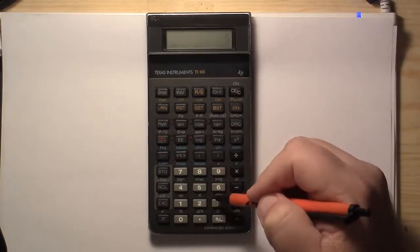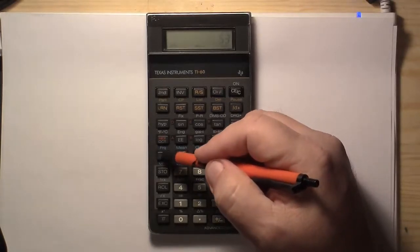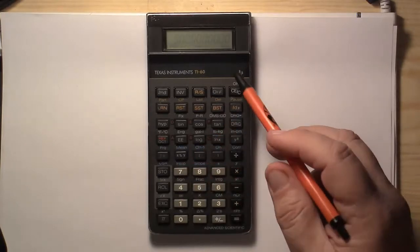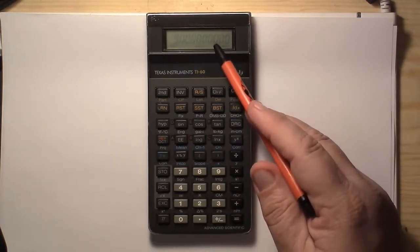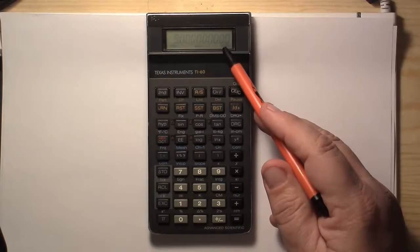53, and then the sigma plus. And it comes up and tells us 9. That means that we have 9 data values in there.